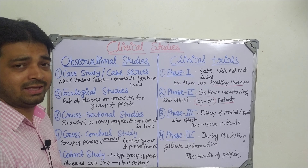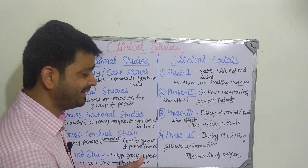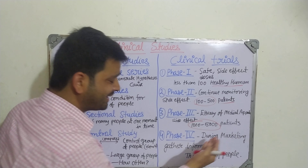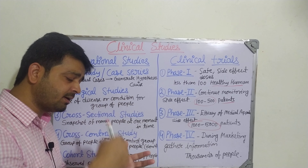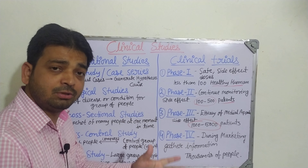Coming to clinical trials — we have already discussed Phase 4 study, but let us review. In Phase 1, we want to know the safety of the particular chemical entity, whether it is giving side effects or not, and what kind of dose we can give to healthy human volunteers. In Phase 1, fewer than 100 to 140 healthy human volunteers are used — those who don't have the disease the drug is made for. We want to know about any side effects.